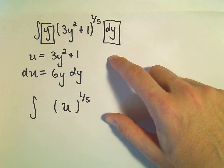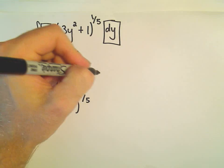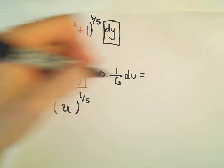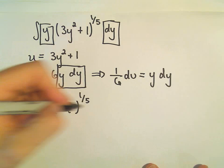Well, here's my y and my dy. I want to get that isolated. So to do that, I'm just going to multiply both sides by 1 over 6. So it says 1 over 6 times du would equal y times dy. So that's what I'm going to replace the y dy with. I'm going to replace it with 1 sixth du. And I'm just going to pull the 1 sixth out front. There's my du.